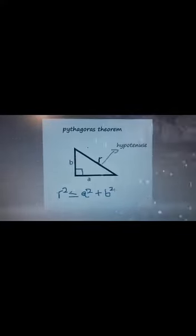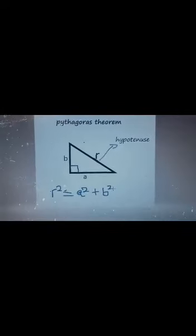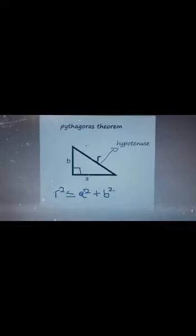So, given any two sides, you can always calculate the other side. Given B and A, you can always calculate R. Given R and A, you can always calculate B.